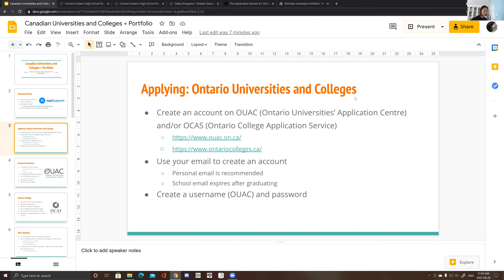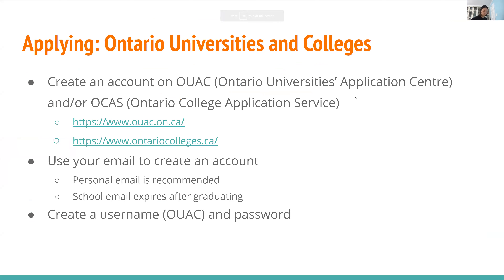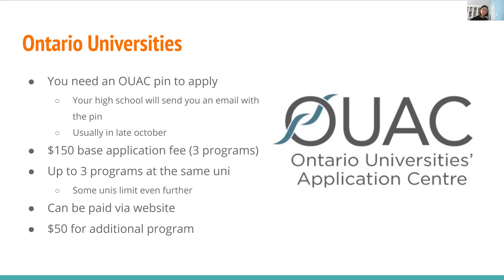You use your email to create an account. I recommend using your personal email since your school email would expire after graduating. You create a username and password. For Ontario universities, you need an OUAC pin to apply — basically, your high school will send you an email with the pin, and this happens usually in late October. There's a $150 base application fee, which lets you choose three programs — up to three at the same university, or a few from the same. Some universities limit it further; for example, OCAD only lets you choose one program. It can be paid on the website.